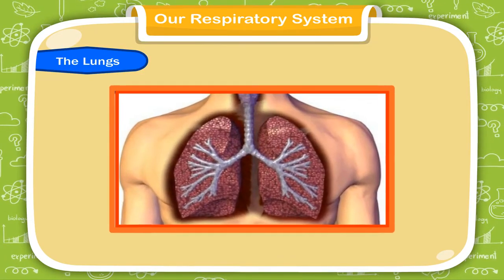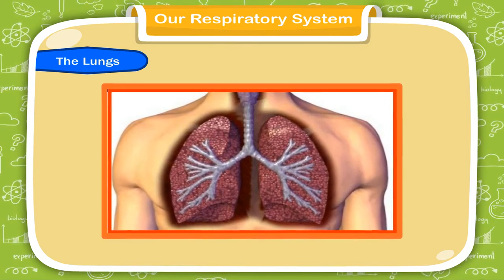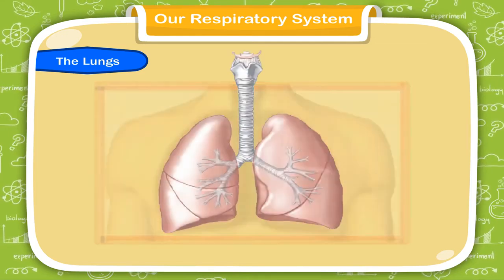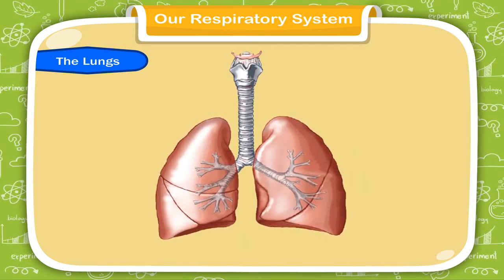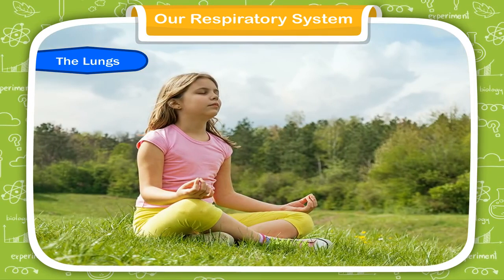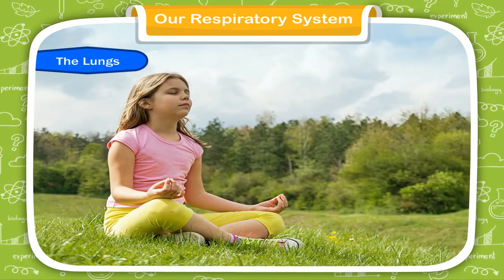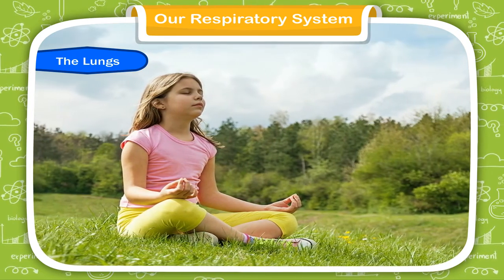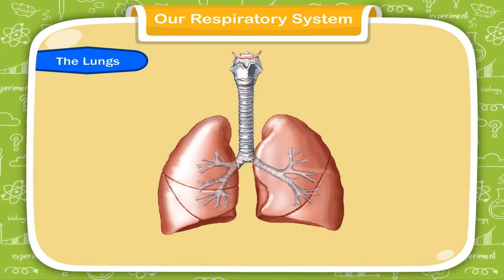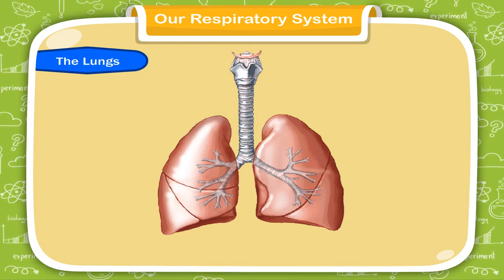Our body has two lungs. They are like soft, moist sponges which are extremely delicate and help in the process of breathing. The air we breathe in fills the lungs — oxygen from the air mixes with the blood and carbon dioxide is given out. The lungs send the absorbed oxygen to different parts of the body through blood.